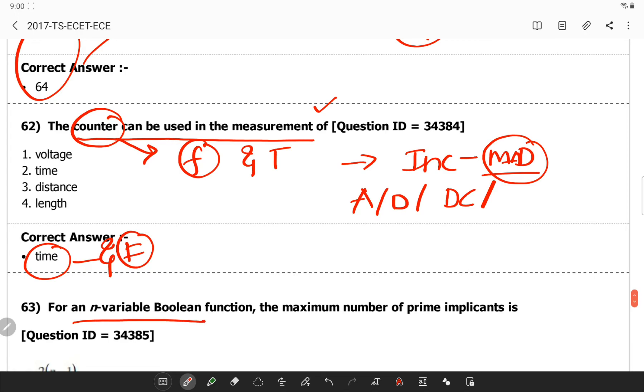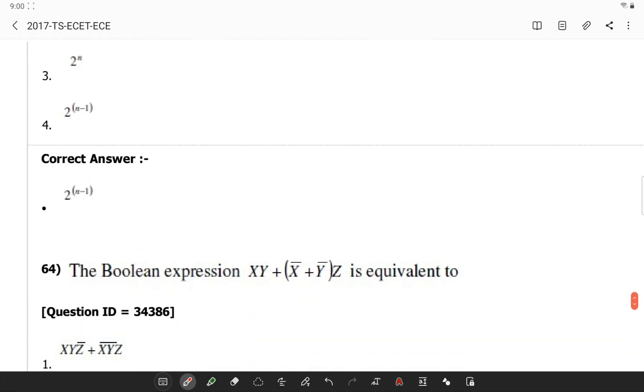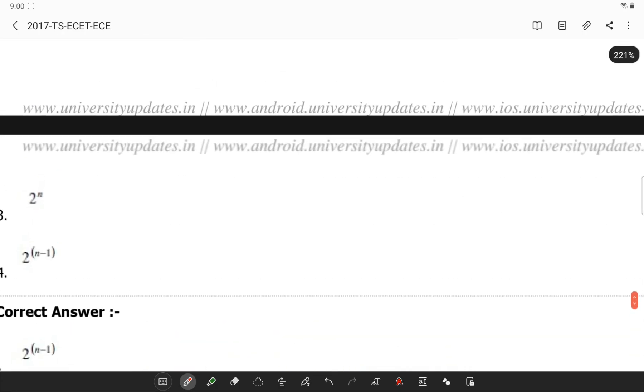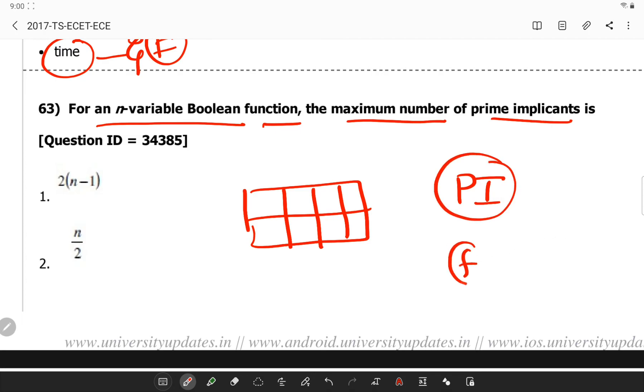For an N variable Boolean function, the maximum number of prime implicants are. If you remember, if you take a 2 by 2 K map, what is a prime implicant? A prime implicant of a function is an implicant that cannot be covered by more general or more reduced meaning a literal. If you see 1 and 1 covered by this and 1 and 1 covered by this.